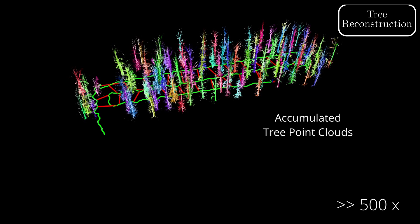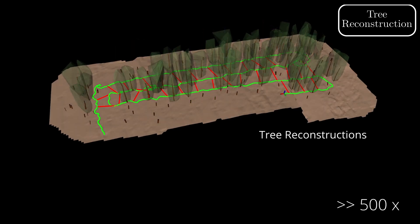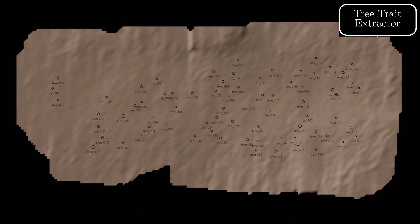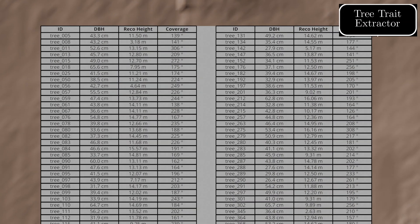Note that using the SLAM system, the data is kept globally consistent at all times. Relevant tree traits can now be extracted from the reconstructed models, which can be compiled into an industry standard report.